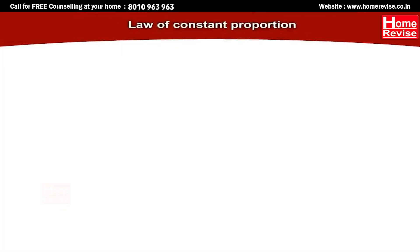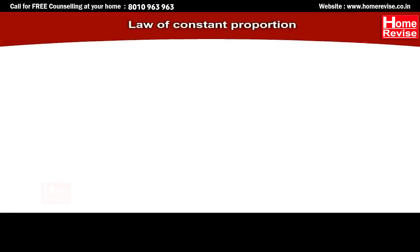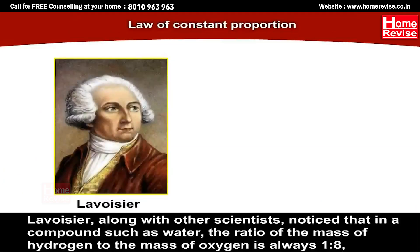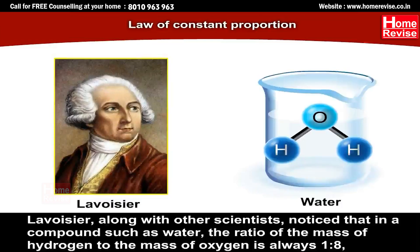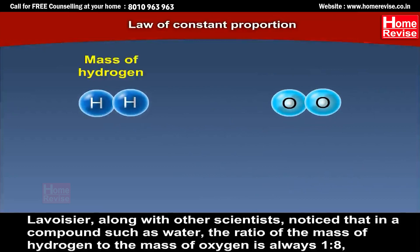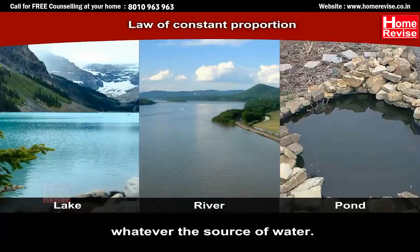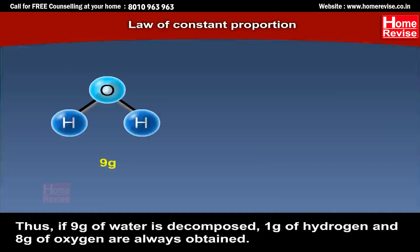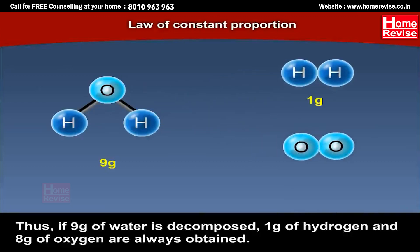The second law is the law of constant proportion. Lavoisier along with other scientists noticed that in a compound such as water, the ratio of the mass of hydrogen to the mass of oxygen is always 1:8, whatever the source of water. Thus, if 9 grams of water is decomposed, 1 gram of hydrogen and 8 grams of oxygen are always obtained.